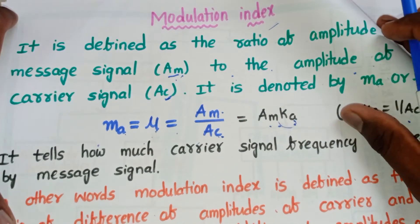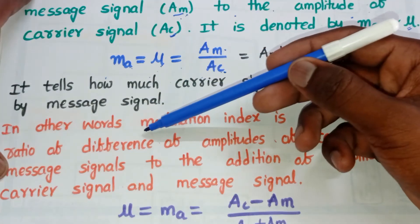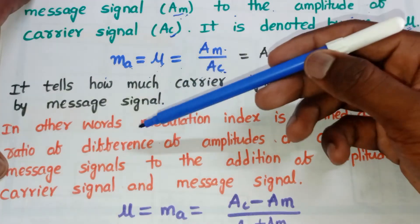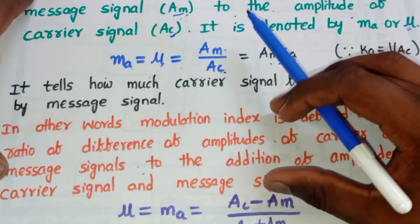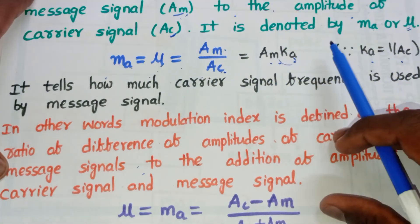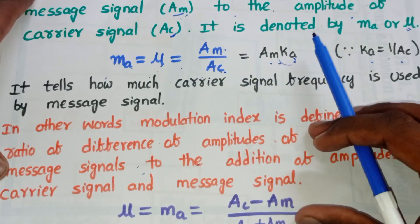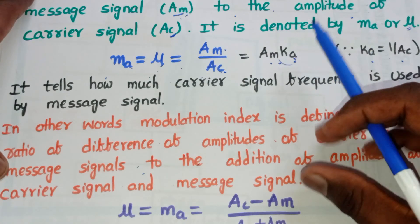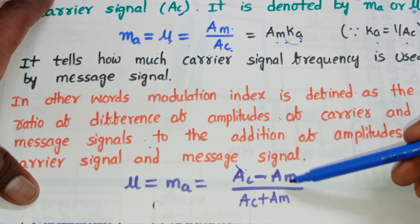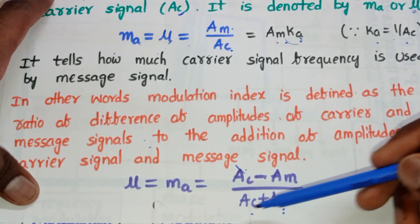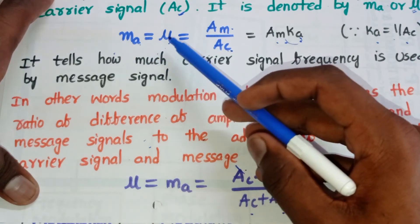There is one more definition for modulation index. In other words, the modulation index is defined as the ratio of the difference of amplitudes of the carrier and message signals to the addition of their amplitudes. That is: mu = ma = (Ac - Am) / (Ac + Am), where Ac is the amplitude of the carrier signal and Am is the amplitude of the message signal.